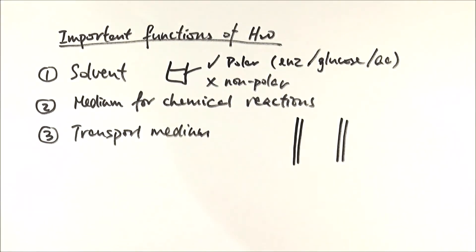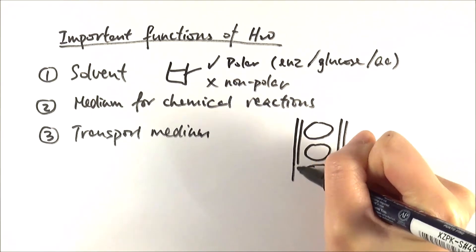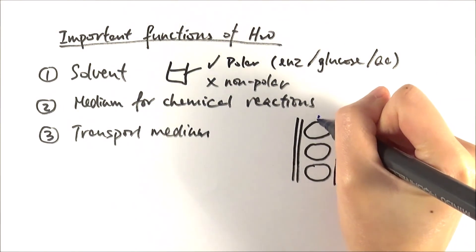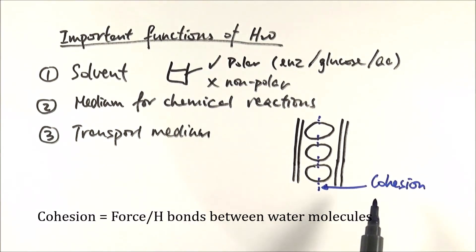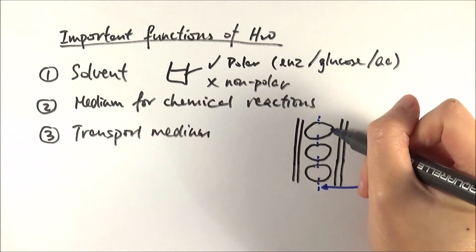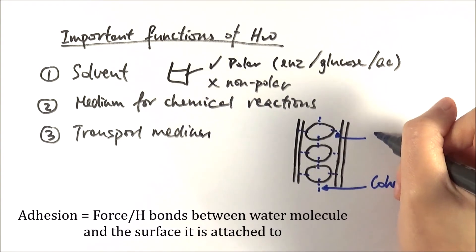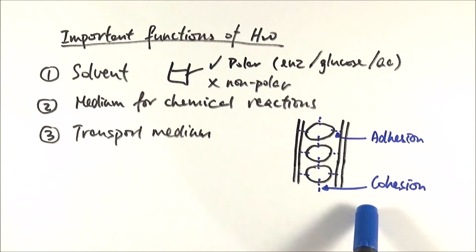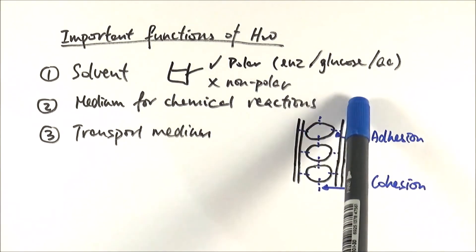The xylem vessel wall and water molecules inside illustrate capillary action. Water molecules travel up the xylem one at a time. Hydrogen bonds between water molecules are called cohesion — think 'co-operation.' Adhesion refers to hydrogen bonds formed between a water molecule and the surface it adheres to — think 'adhere,' meaning sticking to a surface. Capillary action relies on both cohesion and adhesion to transport water molecules upwards: water pulls the next water molecule up, and hydrogen bonds between the water molecule and the wall keep it in place.